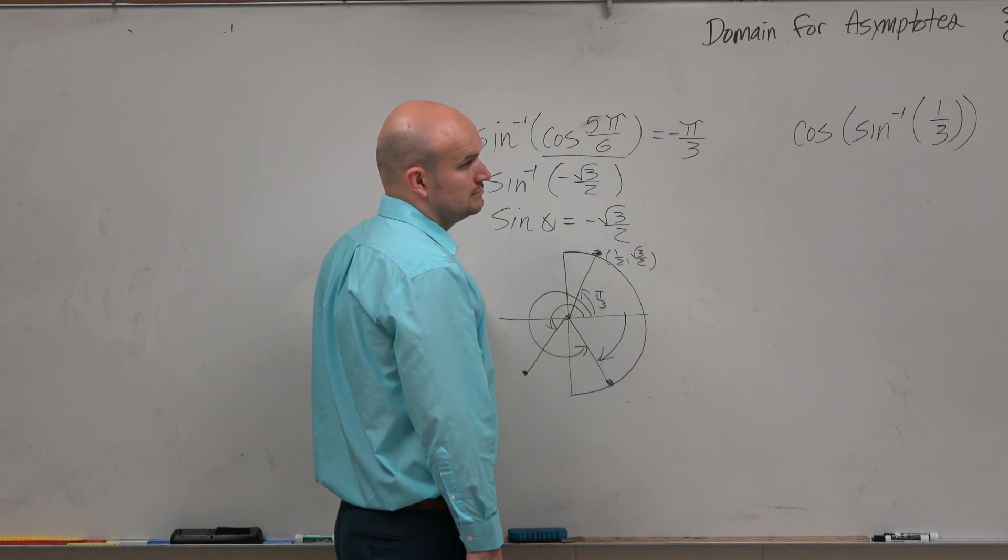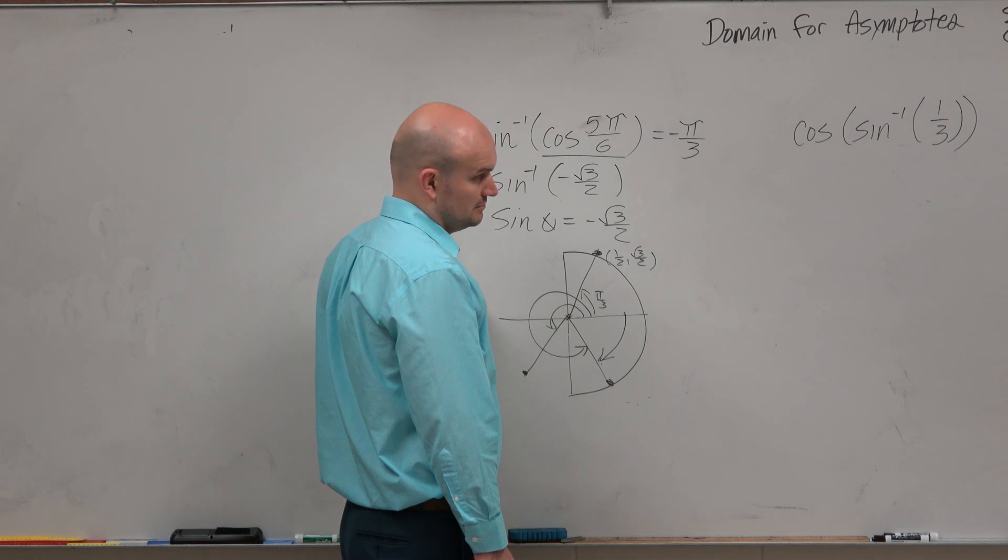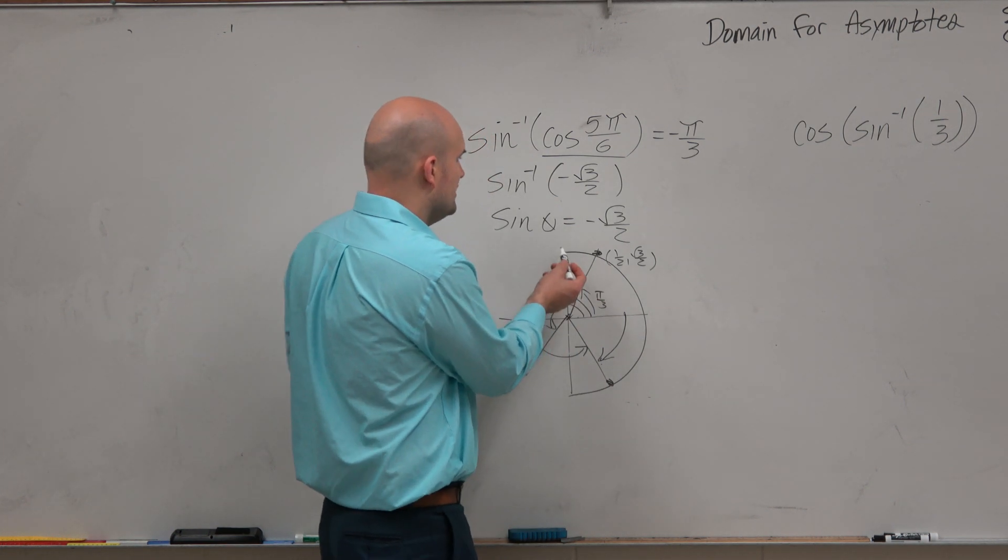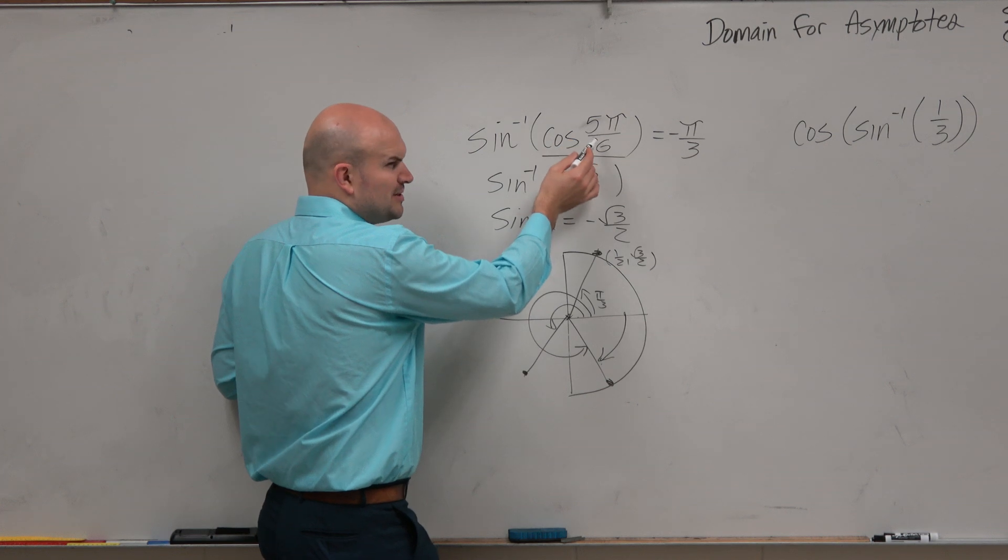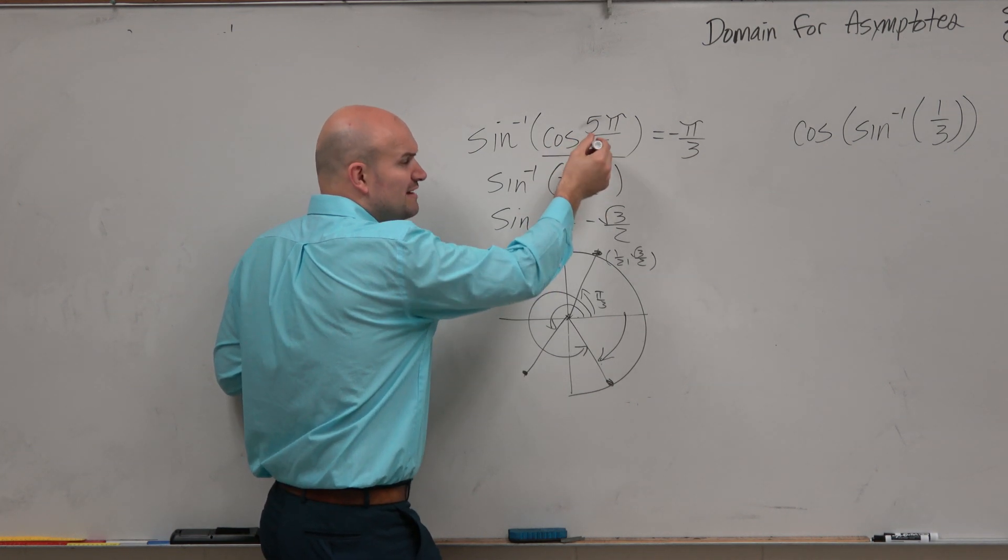So it's for inverses, just any. Only just for the inverses, yeah. But that's the only time. When we're doing it, like when I do the cosine of 5π over 6, there's no restriction, because we're trying to find the value.